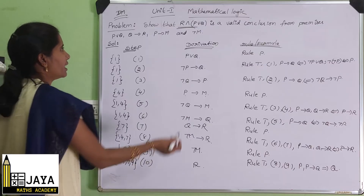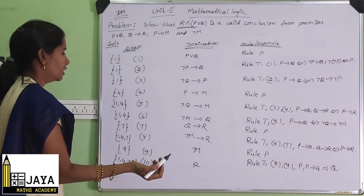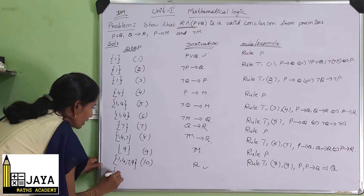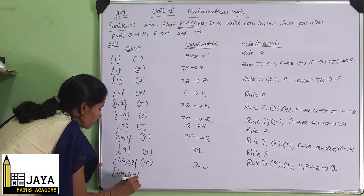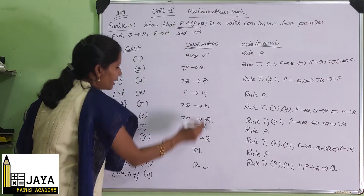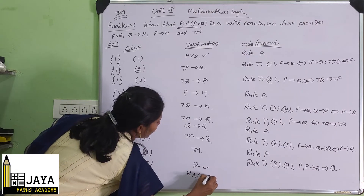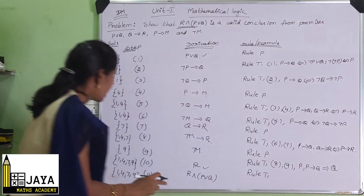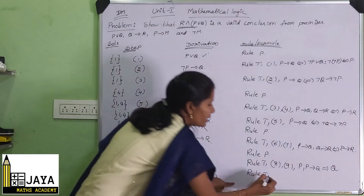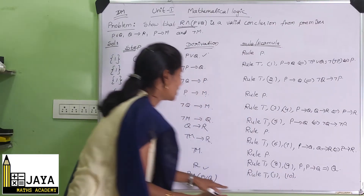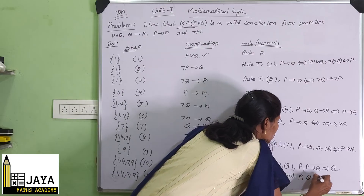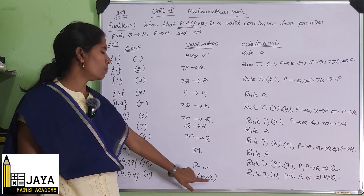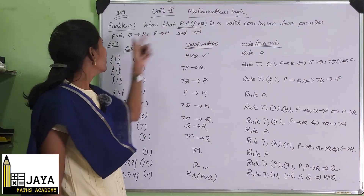So now we have R from step 10 and P∨Q from step 1. In step 11, from steps 1 and 10 — premises one, four, seven, nine — using rule T and the formula P, Q implies P and Q, we get R and P∨Q. Therefore we can say that R and P∨Q is a valid conclusion from the given premises.